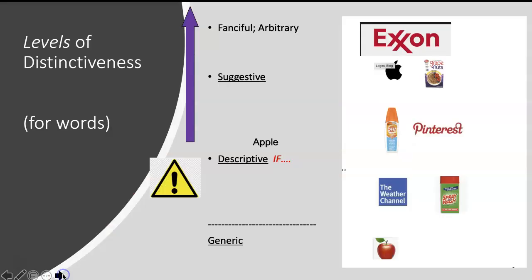Let's look at some further examples of levels of distinctiveness, focusing on distinctiveness for words. The word Apple is generic for the fruit, but the word Apple is actually arbitrary for the company that sells computers and phones and other stuff. Generic is way at the bottom because that's not a valid trademark. The purple arrow shows what is a valid trademark with things on top being stronger. At the very top are arbitrary words and also things that are fanciful.